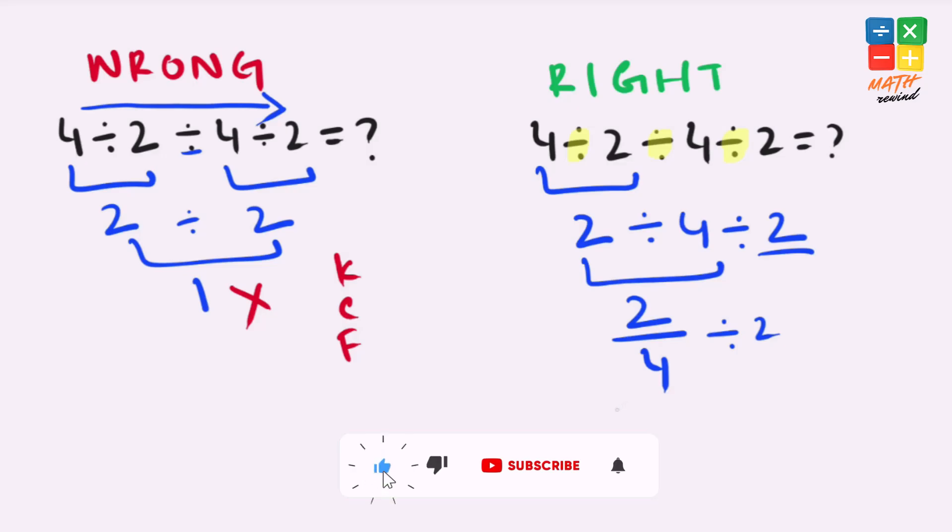Keep means we keep the first part of the expression as it is. Change means we change the division operator to multiplication, and flip means we flip this 2 over 1 as 1 over 2.